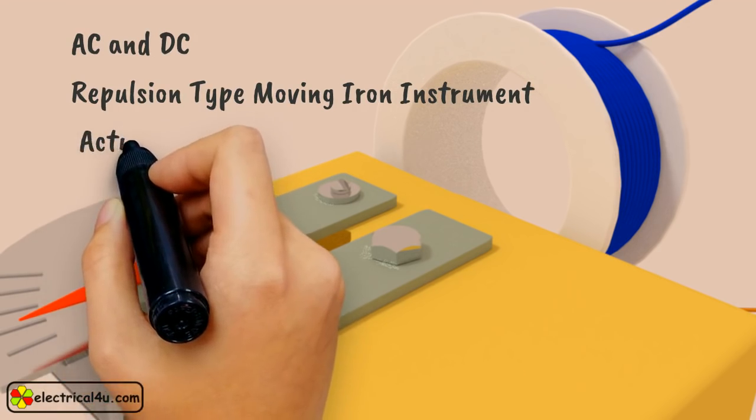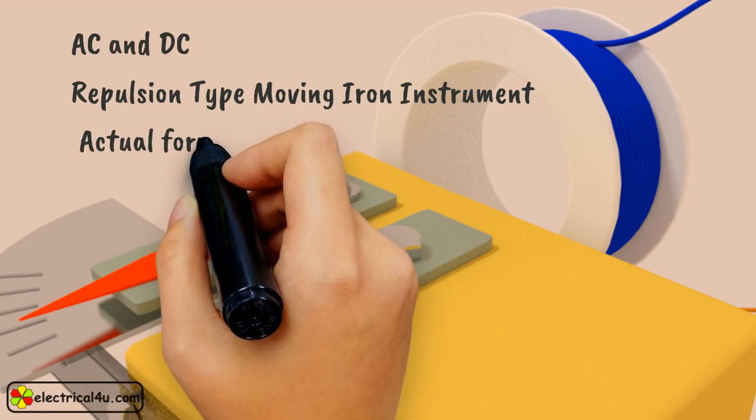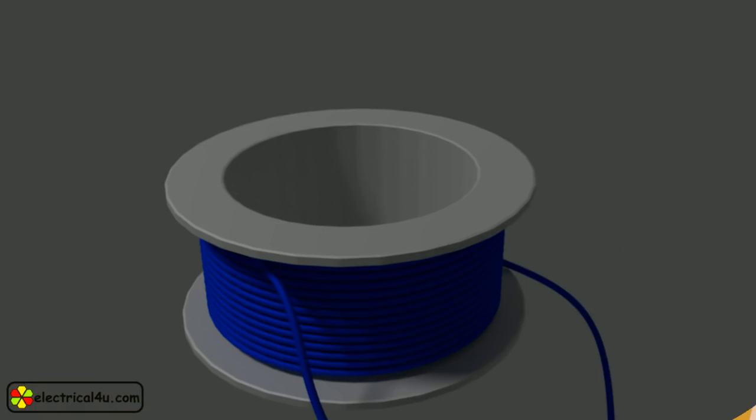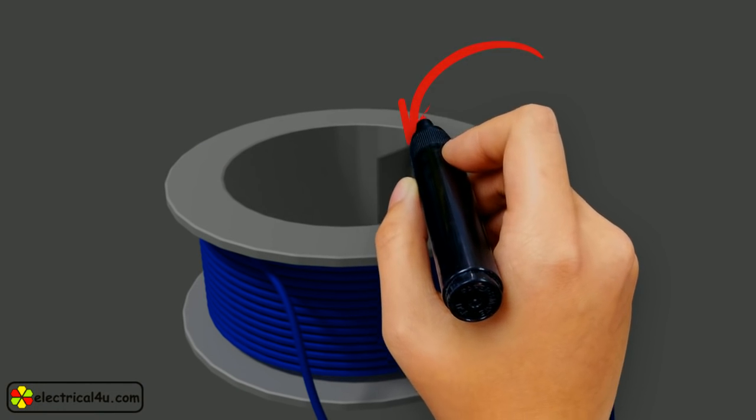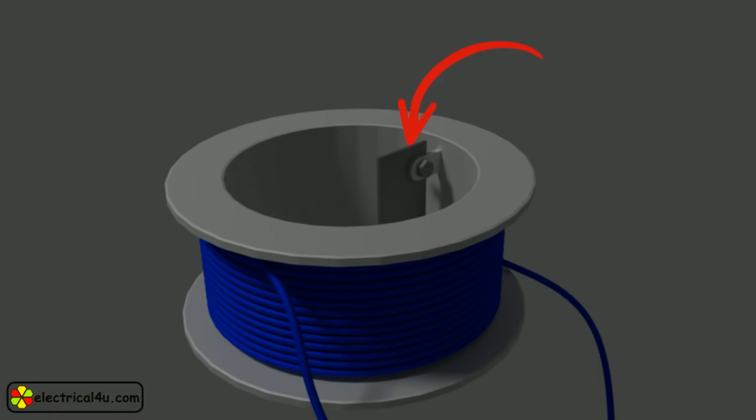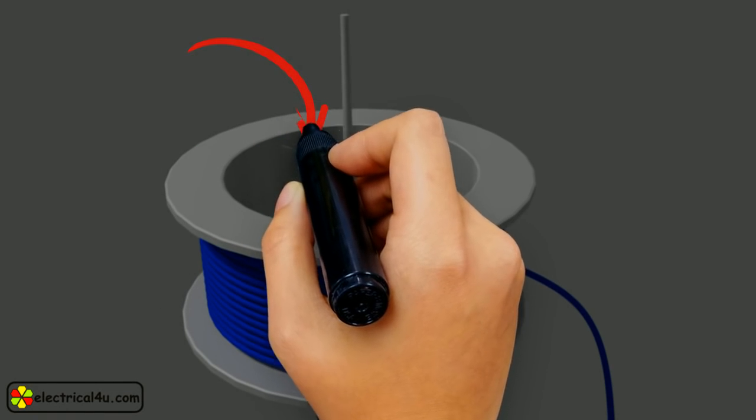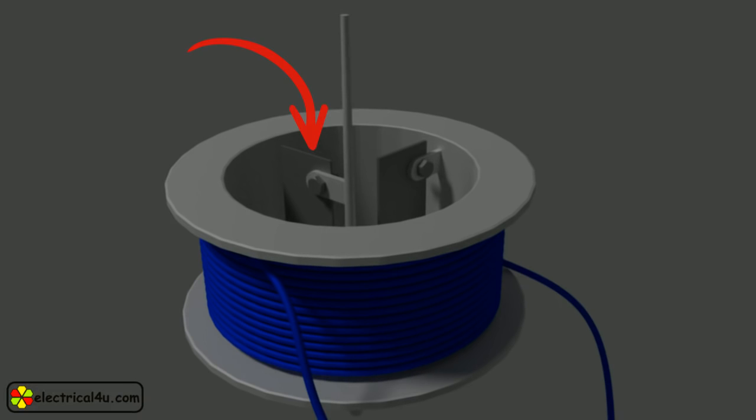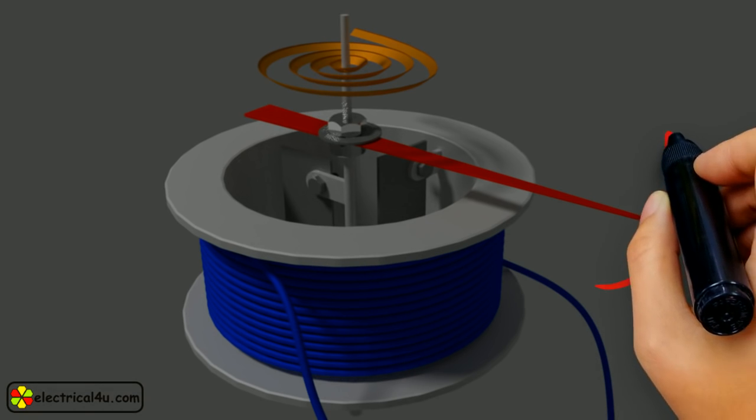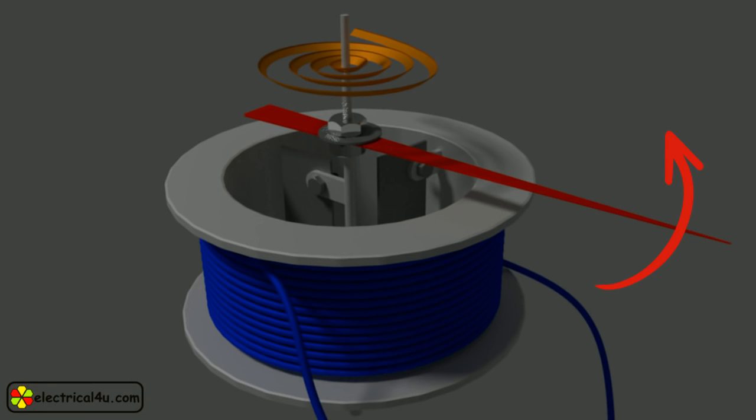Now we will talk about actual forms of repulsion type moving iron instrument. In actual construction, a hollow circular coil is used, and one of the iron pieces is attached inside the hollow coil. The other moving iron piece or moving vane is attached to the shaft. Controlling spring and pointer is also connected with the shaft. As both vanes are placed in the same magnetic field, they are magnetized with the same polarity. Hence the deflecting torque is produced, due to the force of repulsion between two iron pieces or vanes.